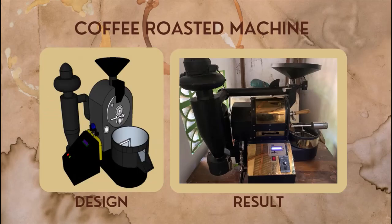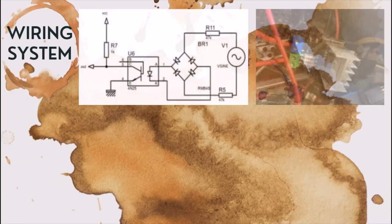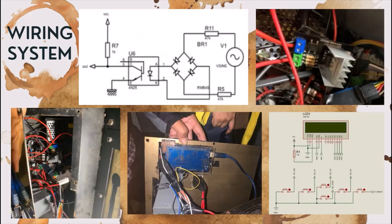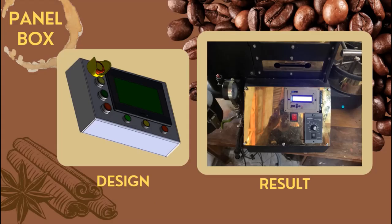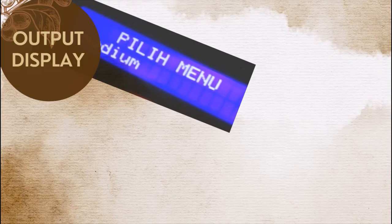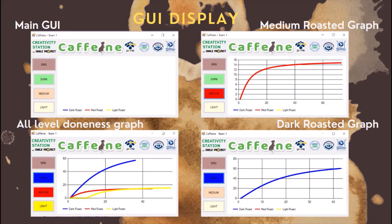Here is the design of the coffee roasting machine and its result. Wiring system design and result. Panel box design and result. LCD output display. And the last one is the GUI display.